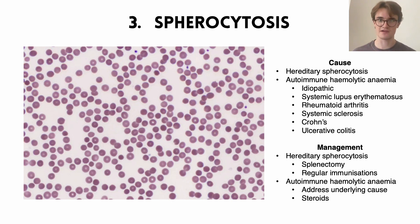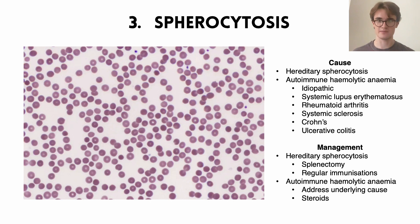For hereditary spherocytosis, the key treatment is removal of the spleen. Because the spleen has an important immune function, we need to give these patients regular immunizations after splenectomy. For autoimmune hemolytic anemias, we address the underlying cause — for example, immunosuppressants for SLE — and a key treatment across all these patients is steroids.